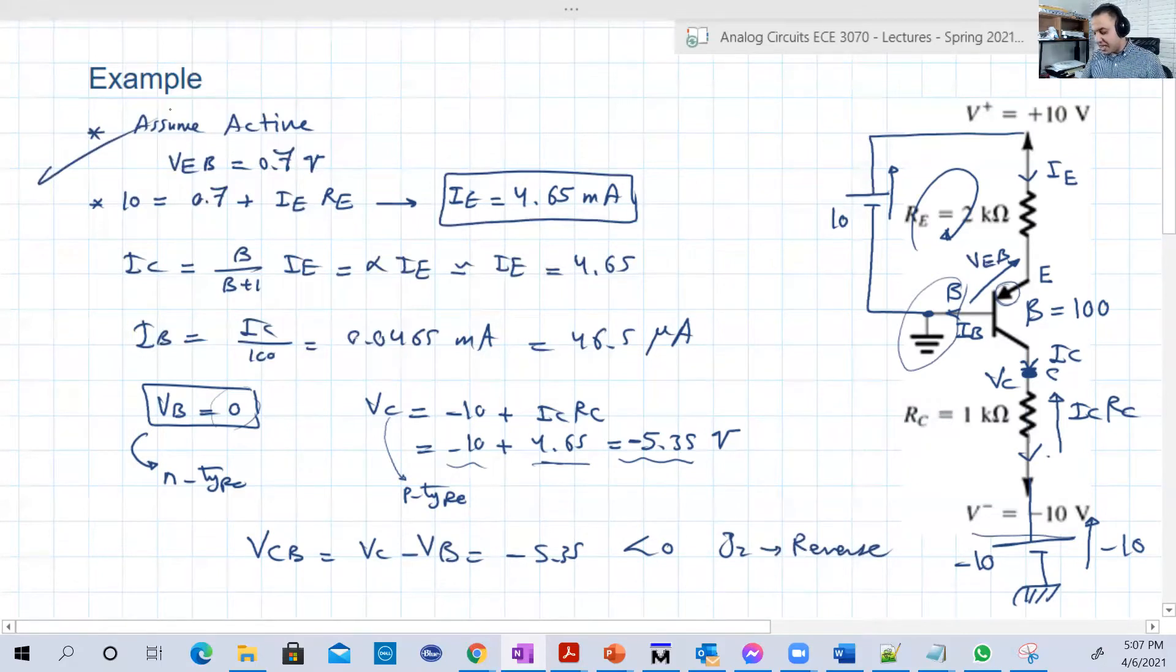Okay guys, this is basically an example for an active region operating PNP transistor. In the next lecture, we're going to check another circuit, but this time we're going to see how the PNP will be analyzed in saturation region. It will be basically the same as NPN, but just to train ourselves. Thank you very much for watching this video and see you in the next video, bye.